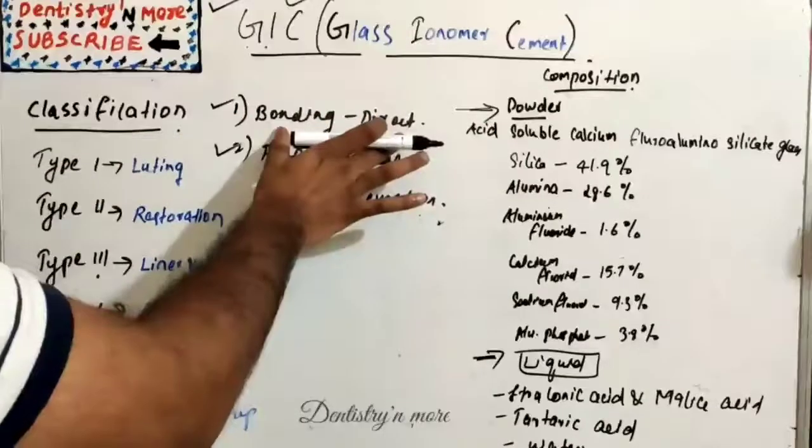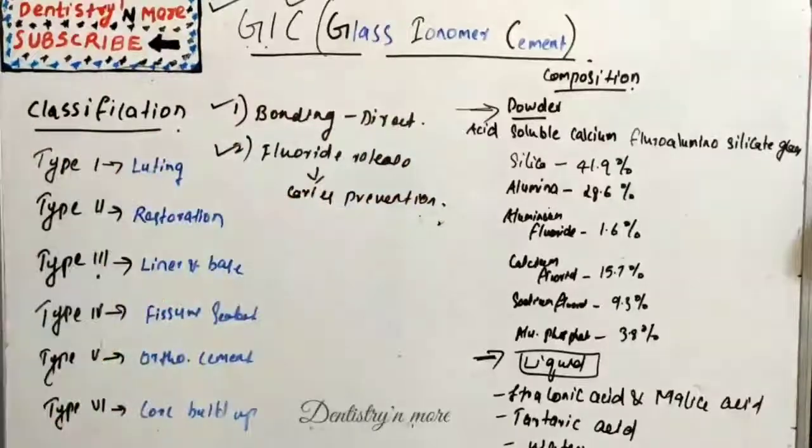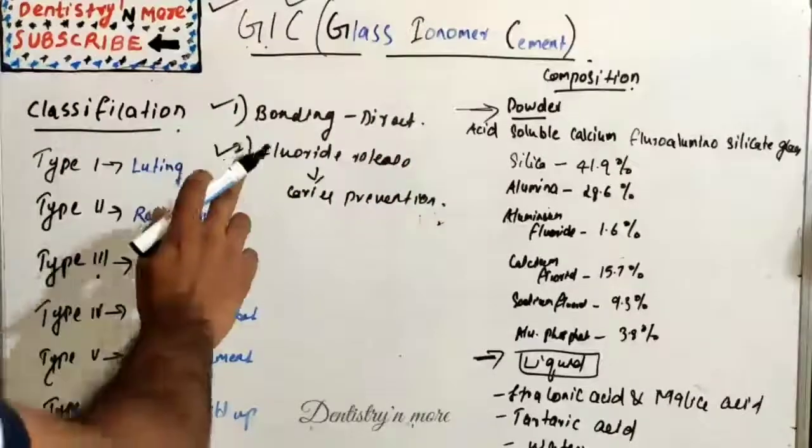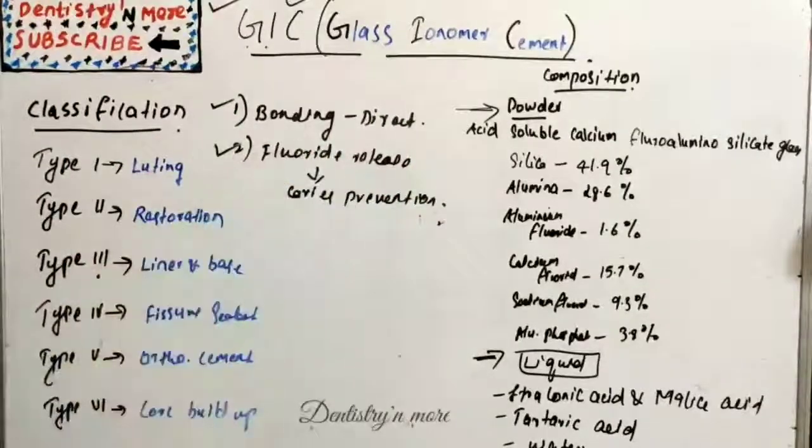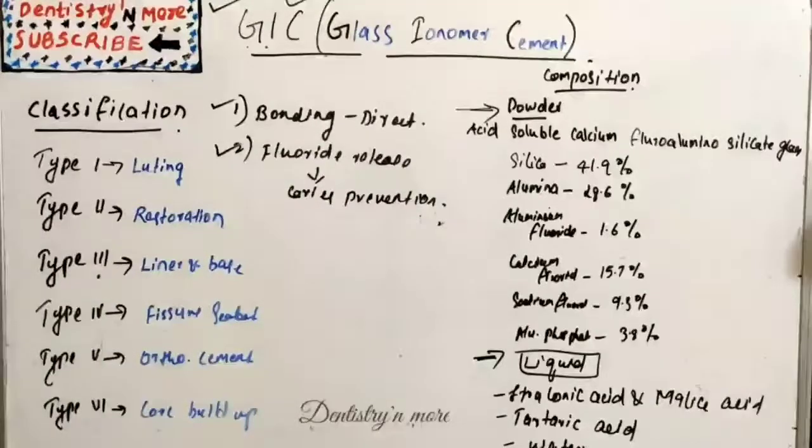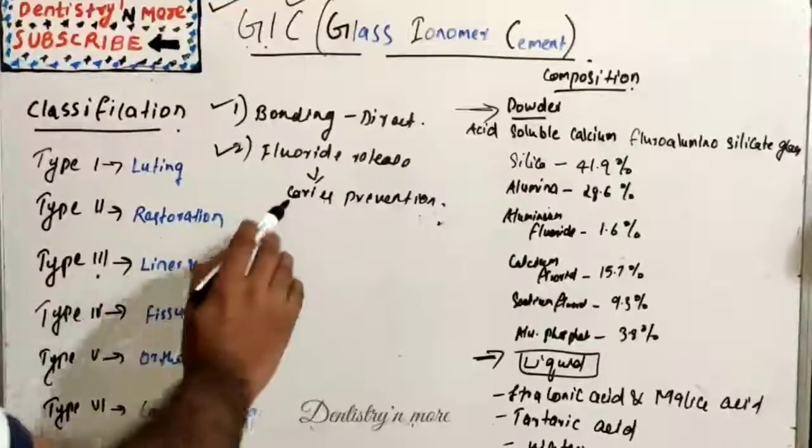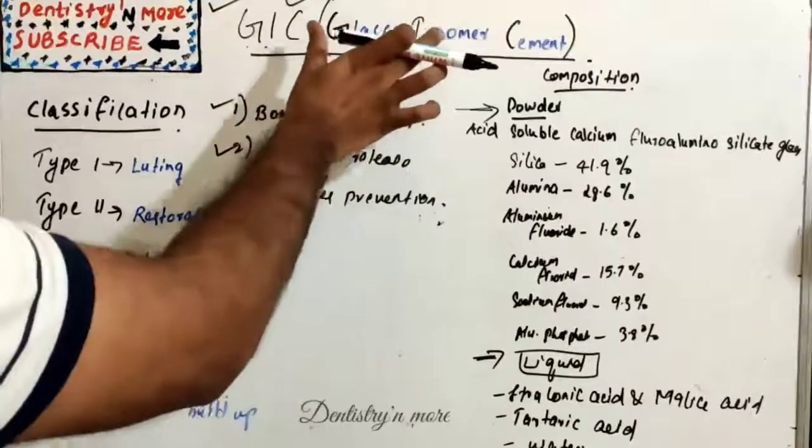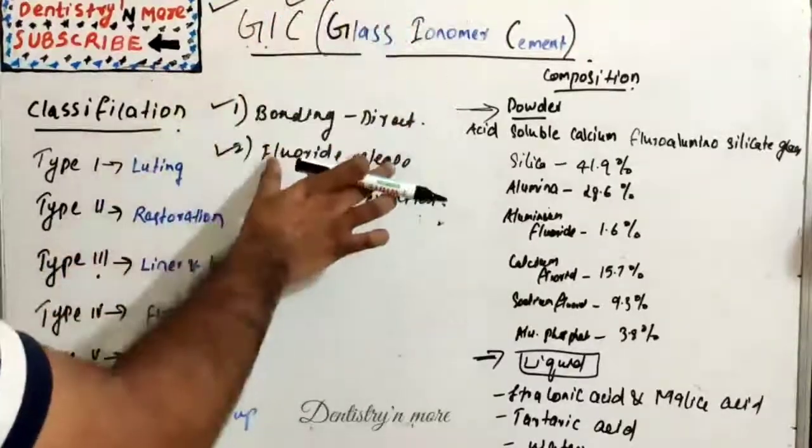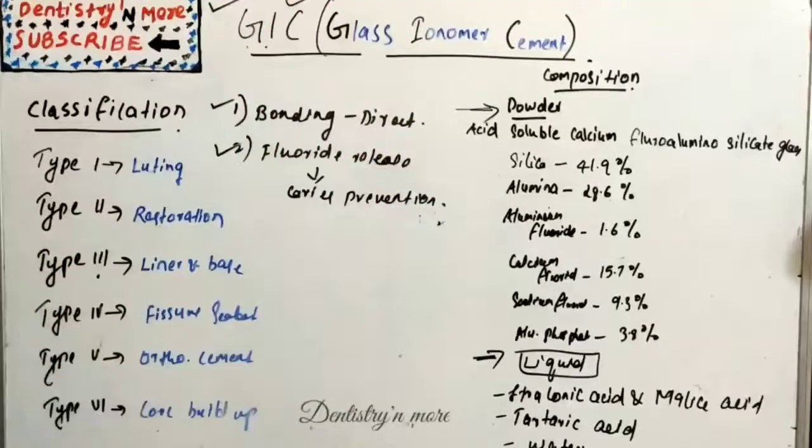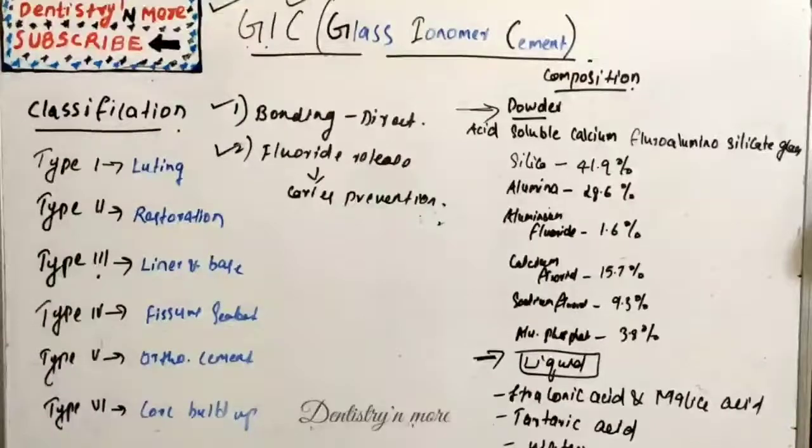The second property is fluoride release. As we all know, fluoride can prevent caries, so the restorative material itself can attribute to caries prevention. So let's learn GIC in detail.